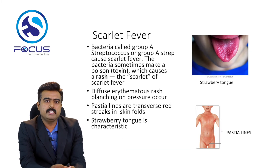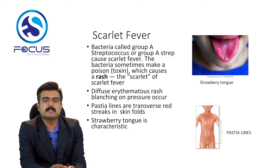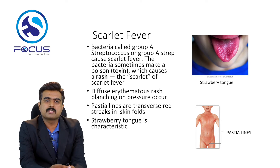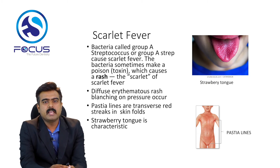The next one is scarlet fever, caused by Group A Streptococcus. The bacteria sometimes make a toxin which causes a rash — a diffuse erythematous rash that blanches on pressure. Another clinical feature is Pastia's lines — transverse red streaks in skin folds. The oral finding is the strawberry tongue, which is very characteristic in scarlet fever.